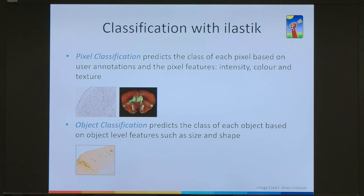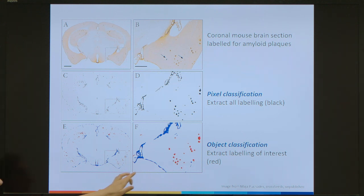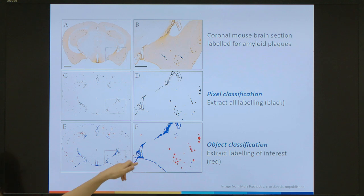In some cases the segmentations you get out are not good enough for quantification because you might have a lot of non-specific labelling pulled out. In this case, it can be useful to do an object classification step, which follows the first step, where you can filter out objects based on object-level features such as size and shape. Here's an example with a section labelled for amyloid plaques — after pixel classification you have non-specific labelling around the edges. The object classification workflow classifies based on object size and shape, since the circular plaques are very different from the elongated non-specific labelling.